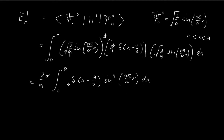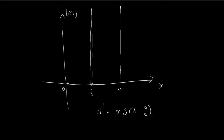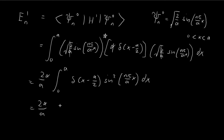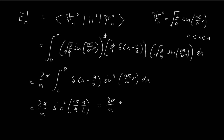To evaluate this expression, we use the nature of the Dirac delta function: it is equal to zero everywhere except at a/2. So once you evaluate the integral, all you're left with is the sine-squared term evaluated at x = a/2. That is the point where the delta function becomes infinity, and that's why it's the only part that survives.